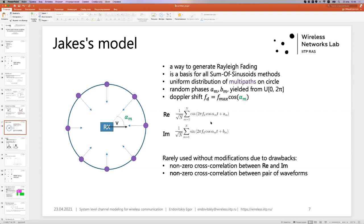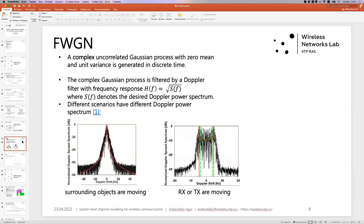It is worth noticing that that particular model, though very popular, is rarely used without modifications due to its drawbacks. First of all, it has non-zero correlation between real part and imaginary part. Second, which is worse, there is non-zero cross correlation between pair of waveforms. So even if we obtain random phases, those fading processes will be somehow correlated. And later in the presentation, we will need to generate a lot of such processes. Now, moving on to the alternative method. And I will remind you, those fading processes are applied to coefficients in a tap delay line.